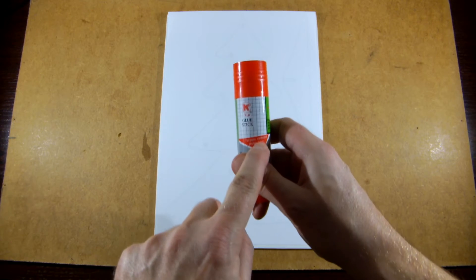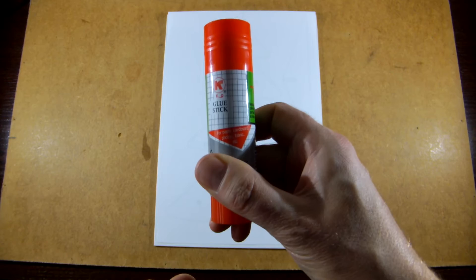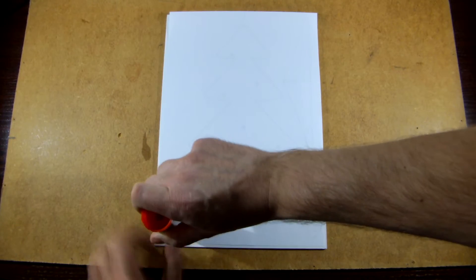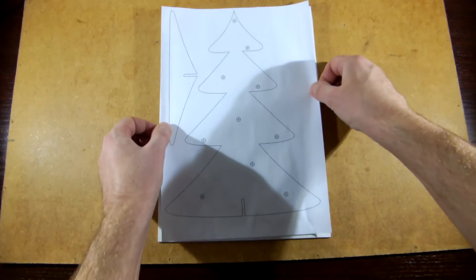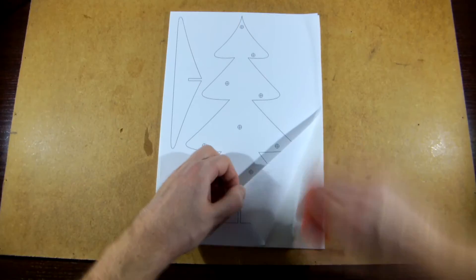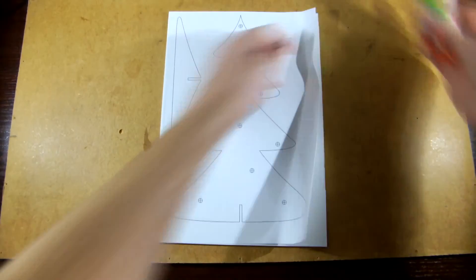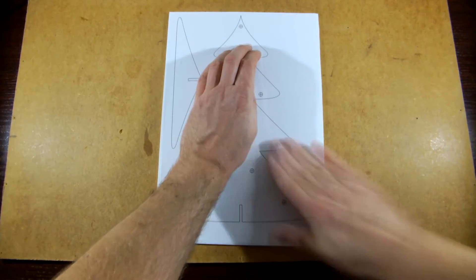Use a glue stick for paper to glue the template to the PVC sheet. Let the glue dry for a couple of minutes. If you're using foam board, remove the paper first.